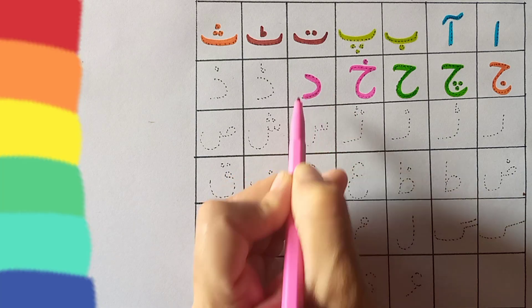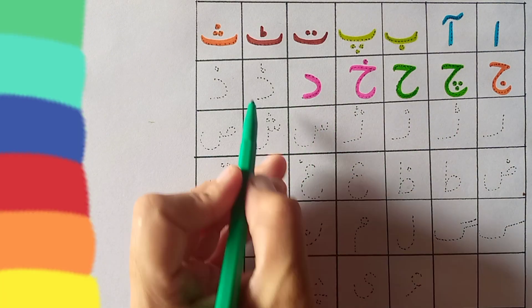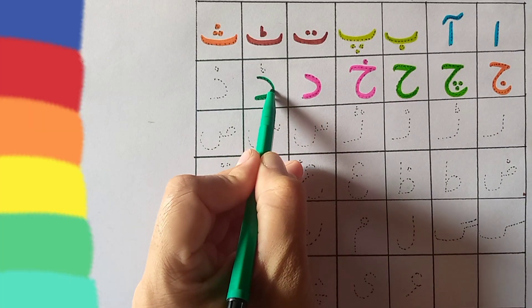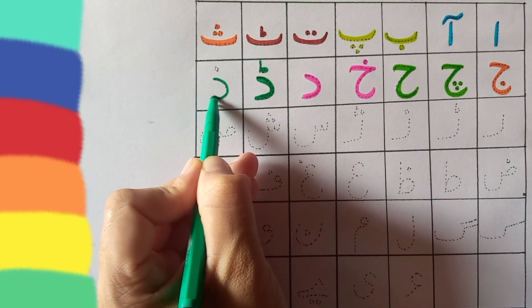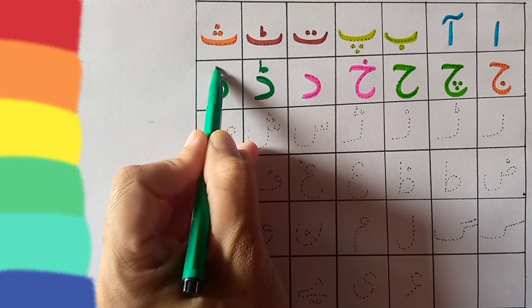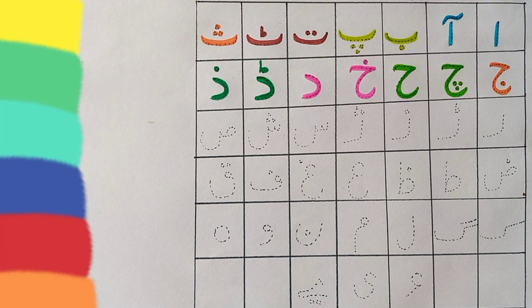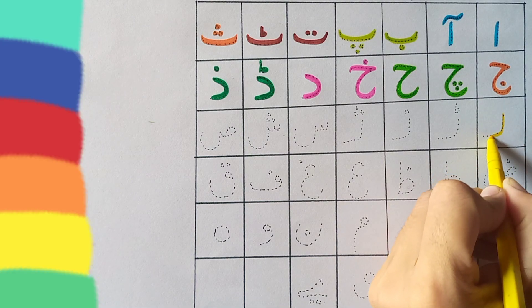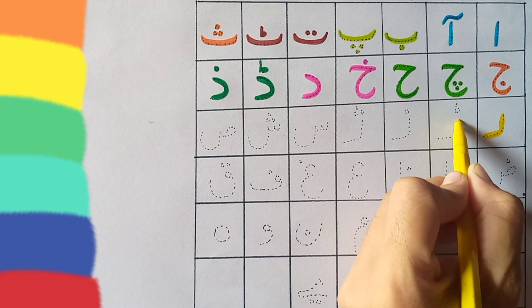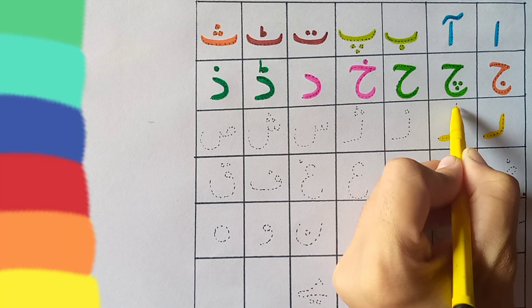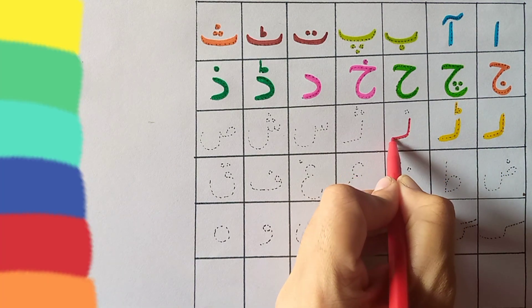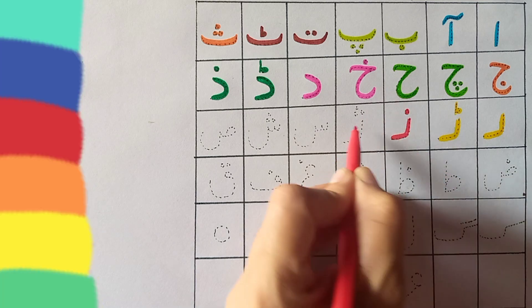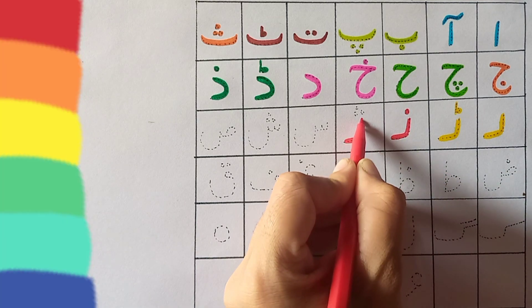Daal, dhobi. Daal, doctor. Daal, dakhira. Zay, railgari. Ray, pahar. Zay, zarafa. Zay, yalbaari.